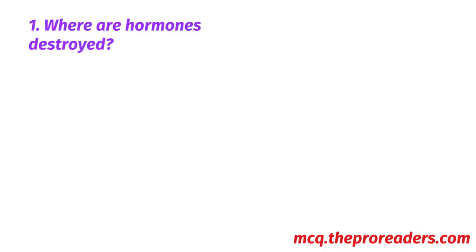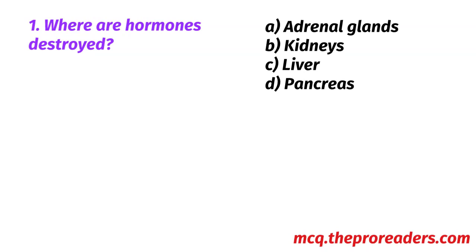Where are hormones destroyed? A. Adrenal glands. B. Kidneys. C. Liver. D. Pancreas. Option C, Liver, is the correct answer.